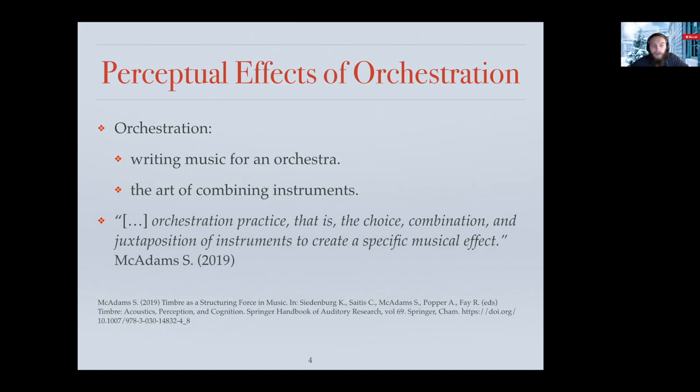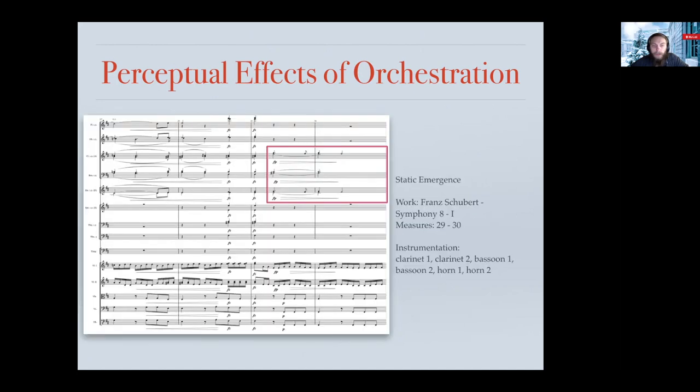I'm going to talk a bit more about orchestration effects and start with showing you three examples. The first one is an emergent blend in Schubert's Symphony VIII, first movement, where the clarinets, bassoons, and horns blend together, which is shown in the red box on the score.